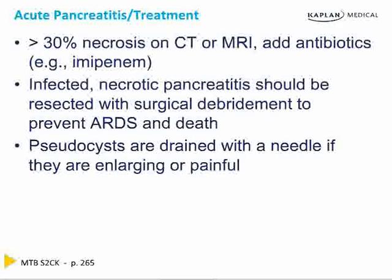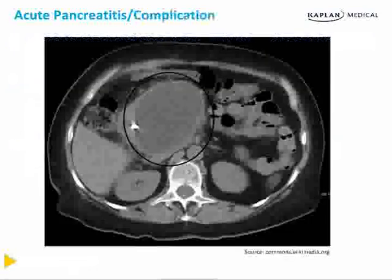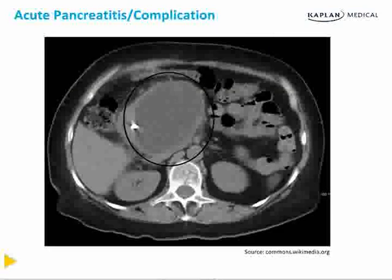Pseudocysts are drained with a needle if they're enlarging or become painful. This can be done percutaneously, but it's more popularly done endoscopically. Here's a CT scan demonstrating a pseudocyst that occurred about 4–6 weeks after a bout of acute pancreatitis secondary to alcoholism.